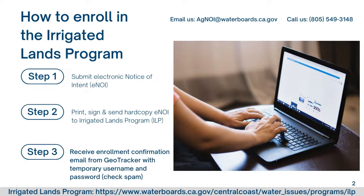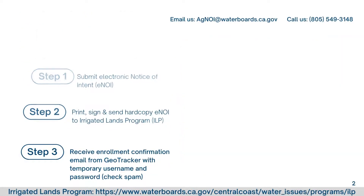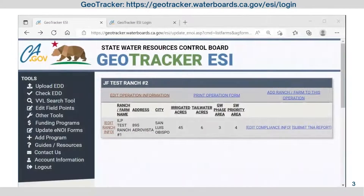Once your enrollment is reviewed and accepted, you will receive an enrollment confirmation email from GeoTracker containing a temporary username and password. Check your spam folder if you did not receive it. GeoTracker is the enrollment and reporting system used by the Irrigated Lands Program to securely store grower-submitted data.